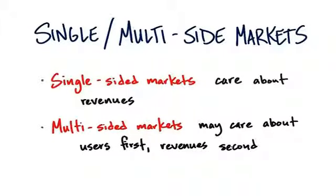Depending on your investors, this might be their strategy. I tend to prefer that we actually try to look for who the payers are as early as possible, but this is a question you might want to ask your investors: do we go for lots of users and then say, if we get 10 million people the revenues will come? Or do we want to look at both sides of the market at the same time? If you're in a physical channel, my suggestion is you want to look at users and payers simultaneously.